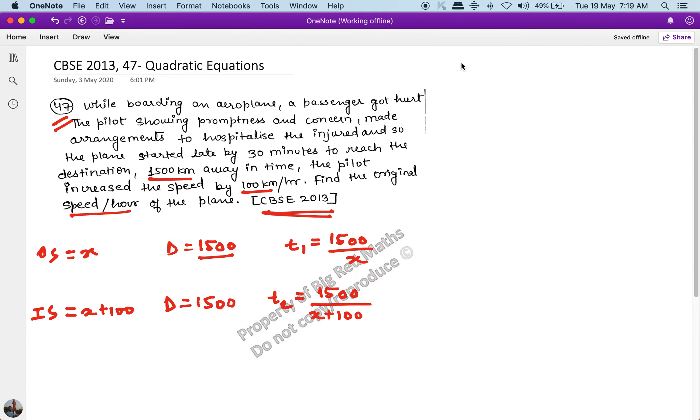And in the second case he started 30 minutes later, which means he took 30 minutes less in the second case. This means that when I went to normal speed, the time was T1, and if I took T2 to get there, he took 30 minutes less. Now 30 minutes needs to be converted because it's all speed per hour, so 30 upon 60, which is 1 upon 2.